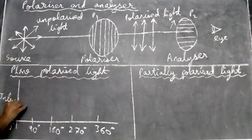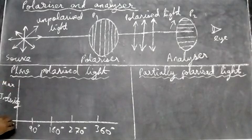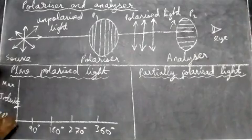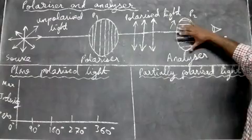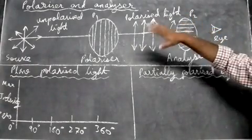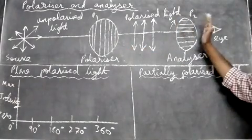The intensity will have a maximum value here and zero here. As you rotate the analyzer, the intensity of light will change. First it will be maximum if both are vertical.